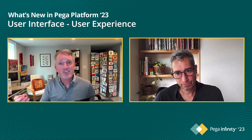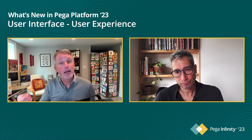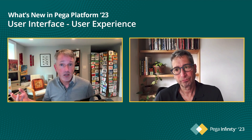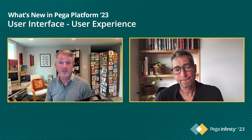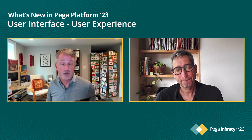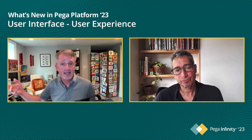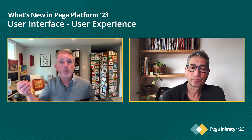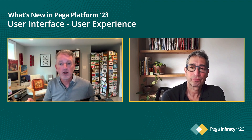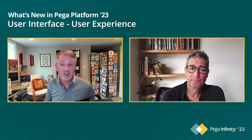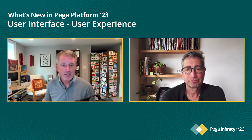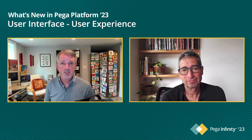Infinity 23 also includes the beginnings of a new out-of-the-box Pega-generated self-service portal. This is important because customers have built self-service portals using our traditional section rule technology and UI Kit - that's a lot of work and we think we can do better. Just like Constellation UX for the back office, this new Pega-generated self-service portal provides a great self-service experience right out of the box, optimized for self-service and quicker time to value.